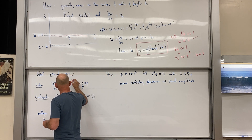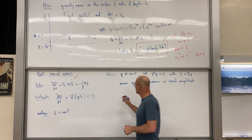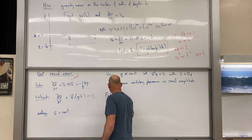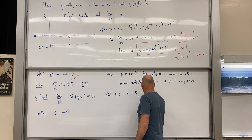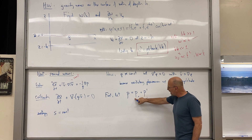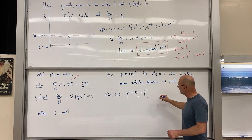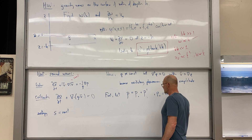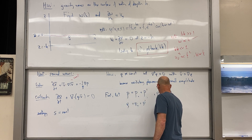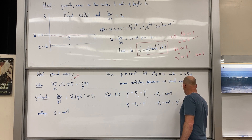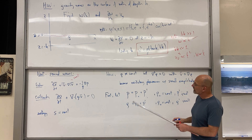We linearize by writing P = P₀ + P' and ρ = ρ₀ + ρ', where P₀ and ρ₀ are the constant equilibrium values, and P' and ρ' are small perturbations. V is already a small quantity. We now linearize both equations.